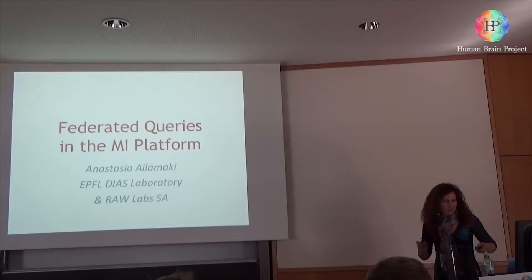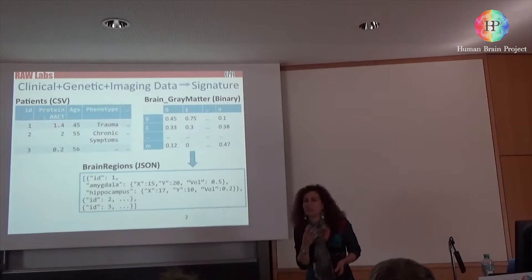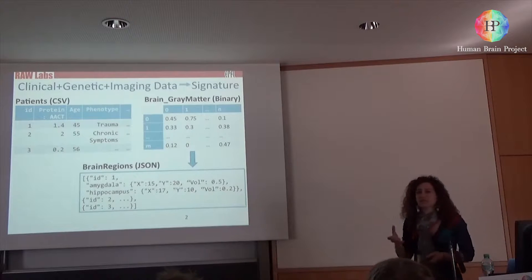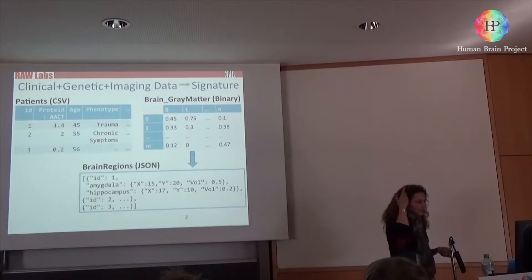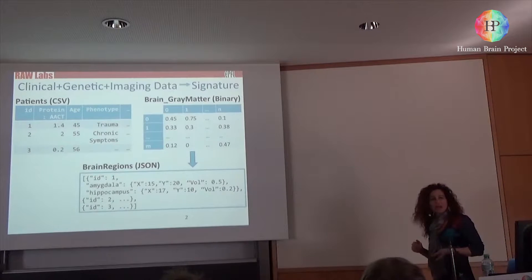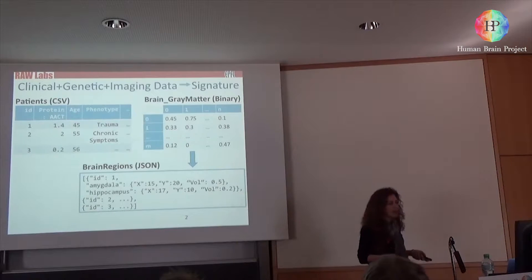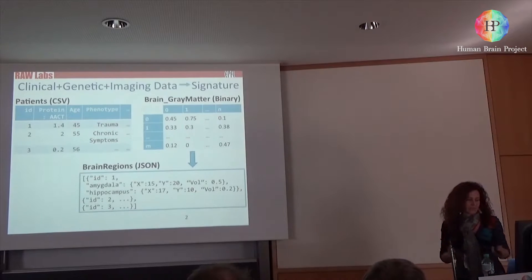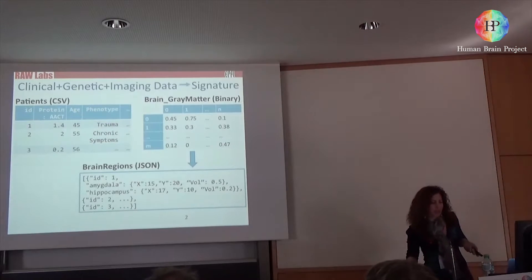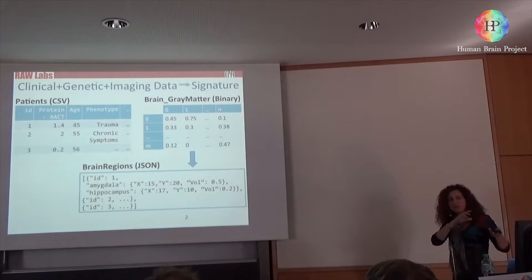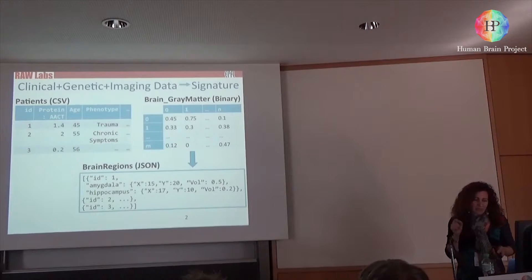The goal here in medical informatics — the sub-project — is to derive disease signatures, biological disease signatures. Here's one example: you have a comma-separated value file, just an ASCII file with values separated by a delimiter — in this case a comma. This file contains clinical information about patients such as their age or results of their blood tests like protein levels, symptoms, et cetera. Then you have a binary array format that maps the patient's brain in a coordinate space and keeps the measurements of the gray matter volume for each coordinate.